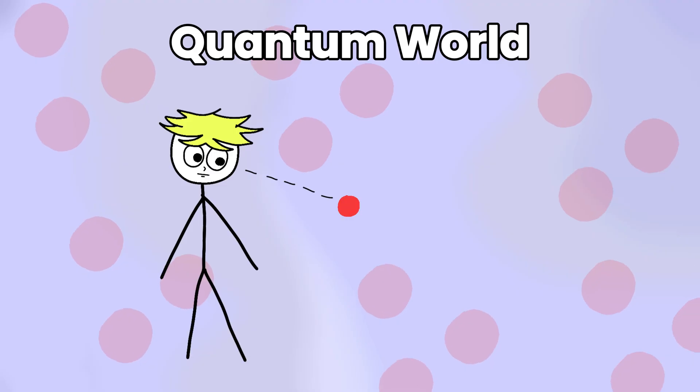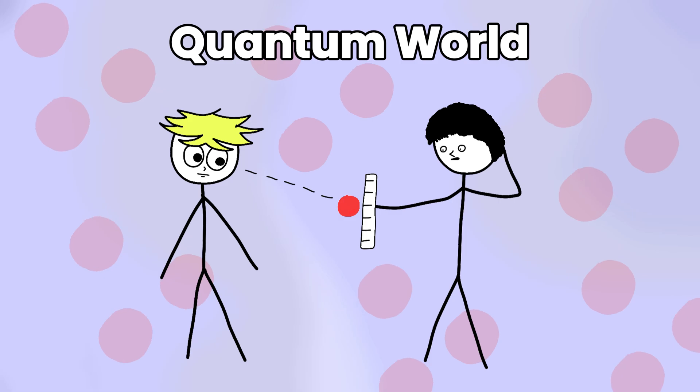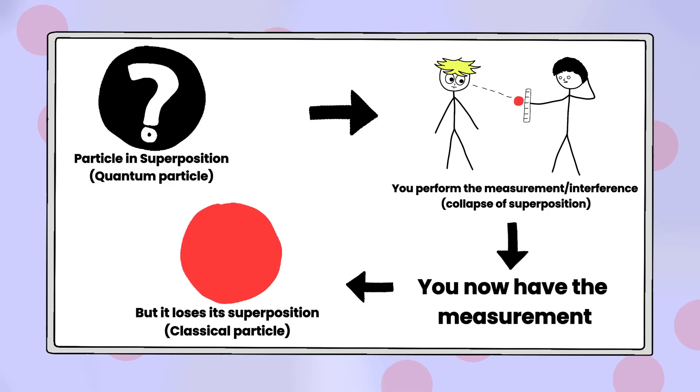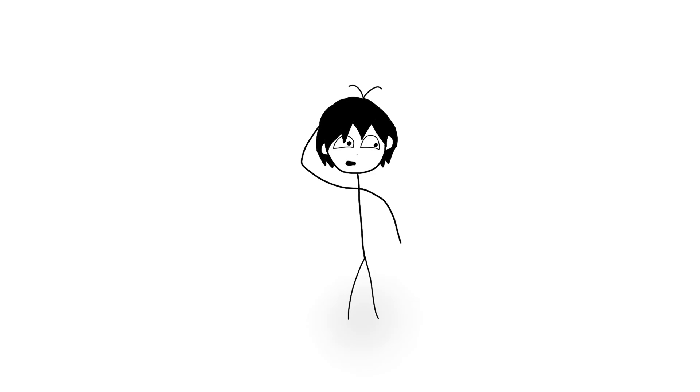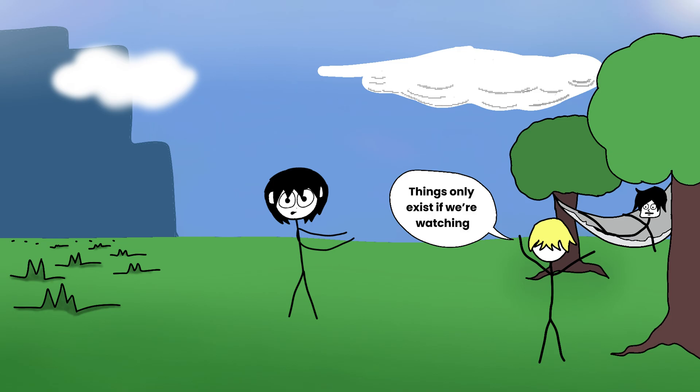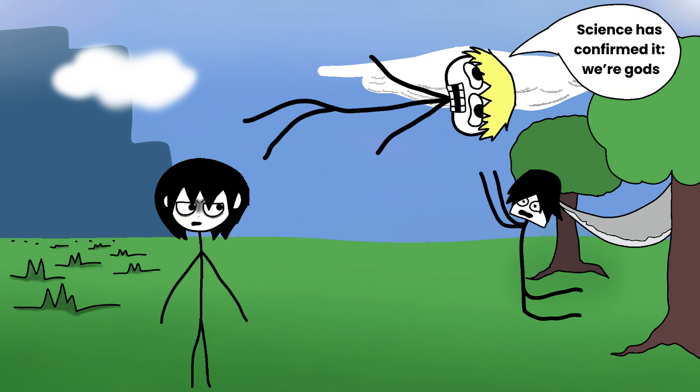In the quantum world, to observe a particle is the same as to measure it. But to do that, you necessarily have to interfere with the particle. So the big misunderstanding here is caused by two main things: the terminology, and the way the experiment is often explained in a sensationalist, sometimes almost mystical way.